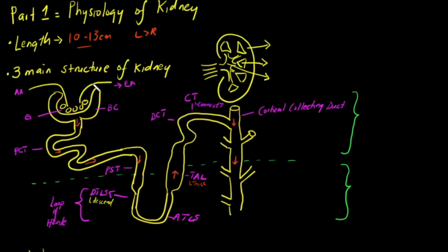There are three main structures of a kidney. The outer part is called the cortex — the outermost region. It typically contains your renal capsule, your proximal convoluted tubule, and your distal convoluted tubule of the nephron, all located in the cortex.